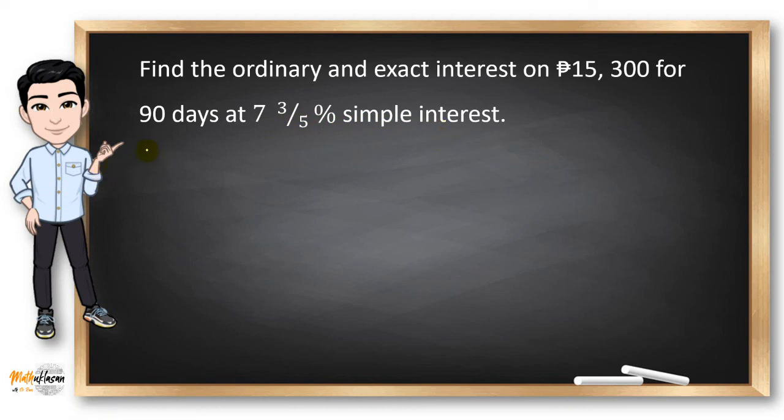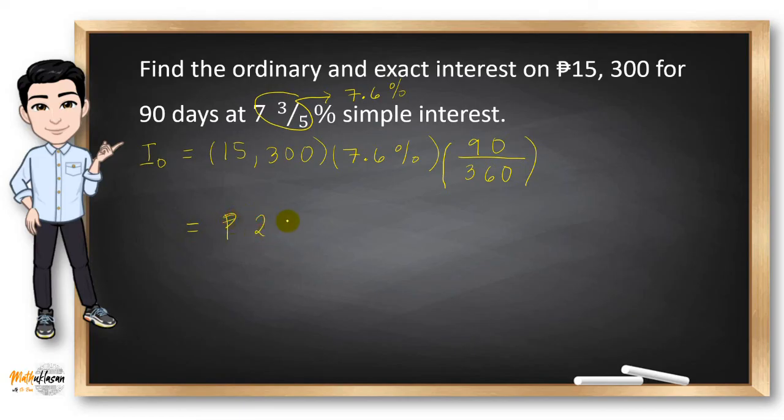So let's find the ordinary interest first. The principal is P15,300. The rate is 7.75%, which could also be written as 0.0775. So this is 15,300 times 0.0775 times 90 over 360 days. We are using ordinary interest, so we need to change the denominator into 360. And here, the answer will be P290.76.